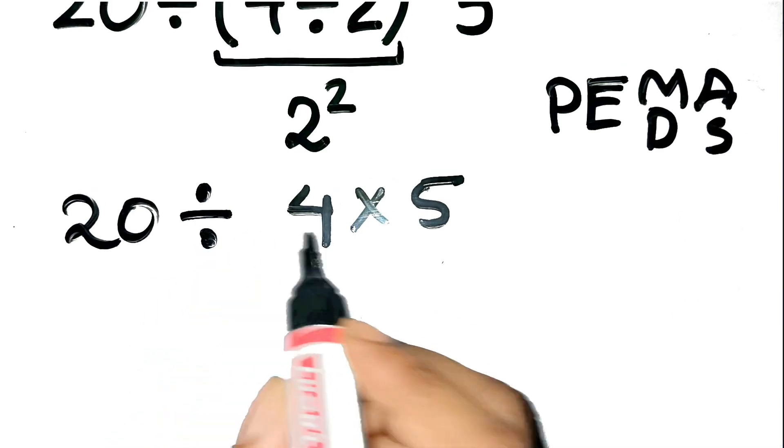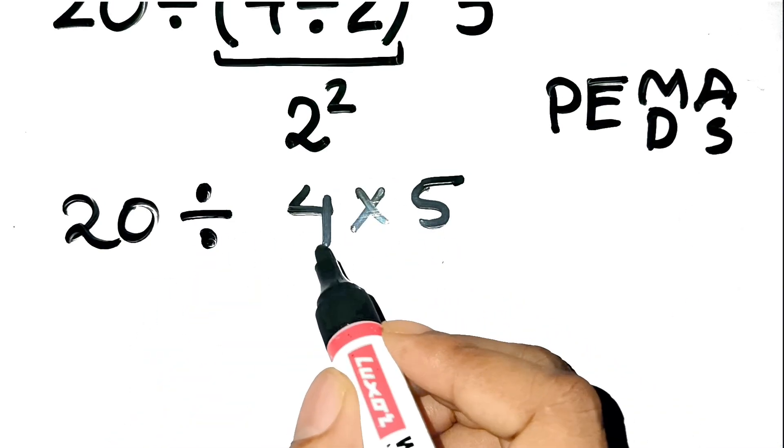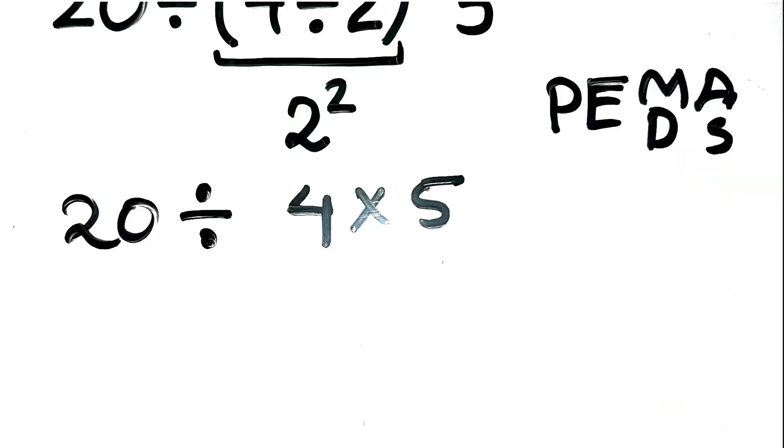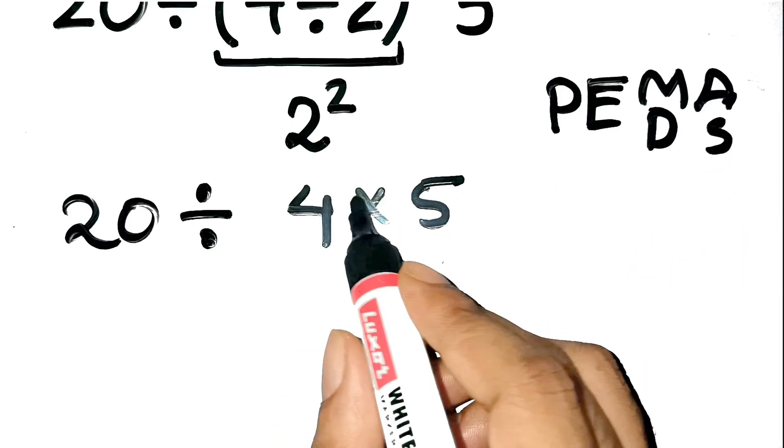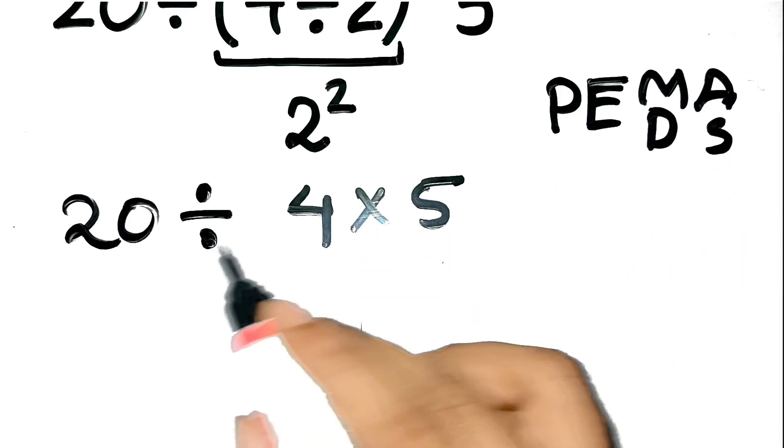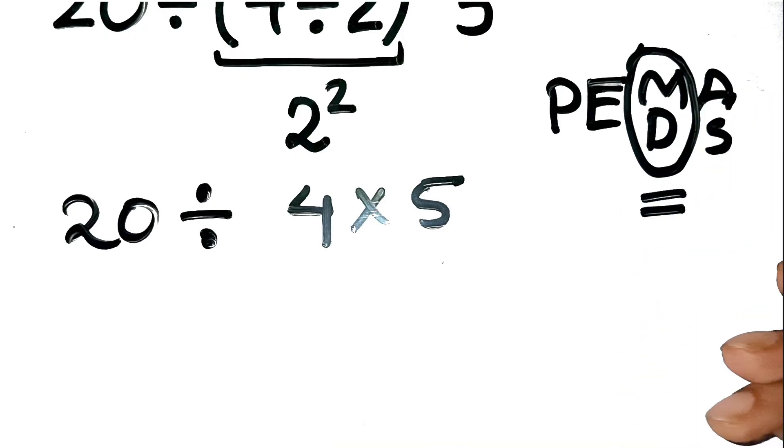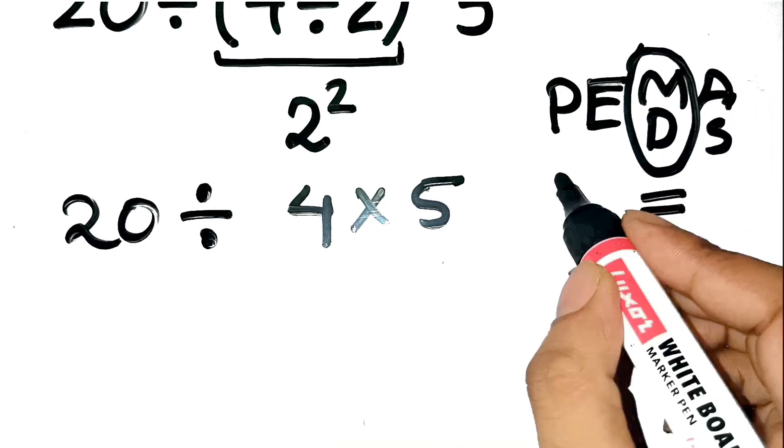They see the multiplication and division and start doing multiplication first because of MDAS. But PEMDAS doesn't mean you always do multiplication before division. Multiplication and division have equal priority, and you solve them from left to right.